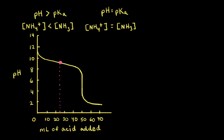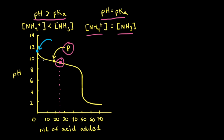Next, let's think about what the titration curve tells us about the relative concentrations of our weak conjugate acid-base pair. At the half equivalence point, pH = pKa and [NH4+] = [NH3]. Consider point P, just to the left of the half equivalence point, where pH is greater than the pKa. Since point P is between the initial point (almost all NH3) and the half equivalence point (equal NH3 and NH4+), at point P there must be more NH3 than NH4+. So when pH > pKa, the concentration of ammonia is greater than the concentration of ammonium.